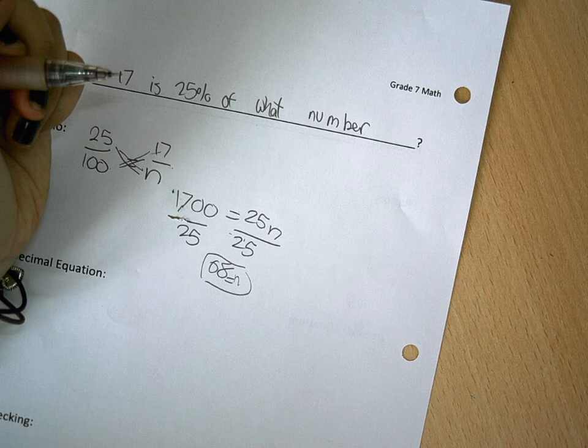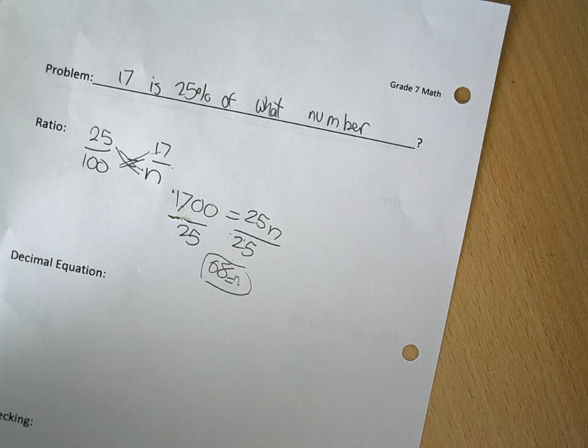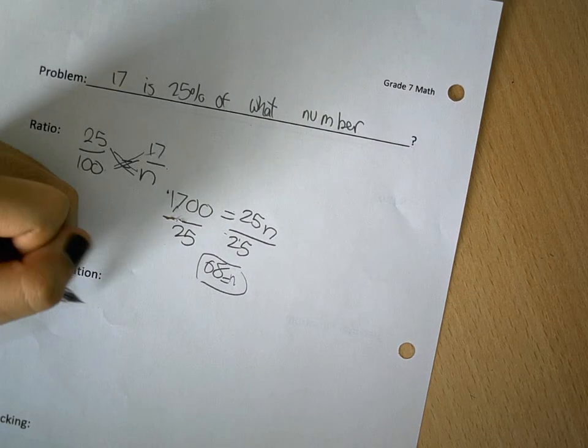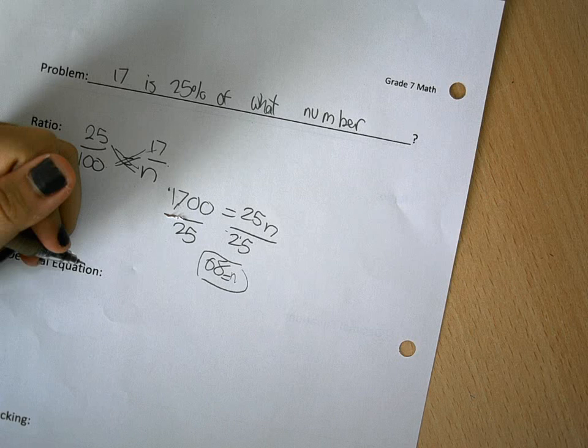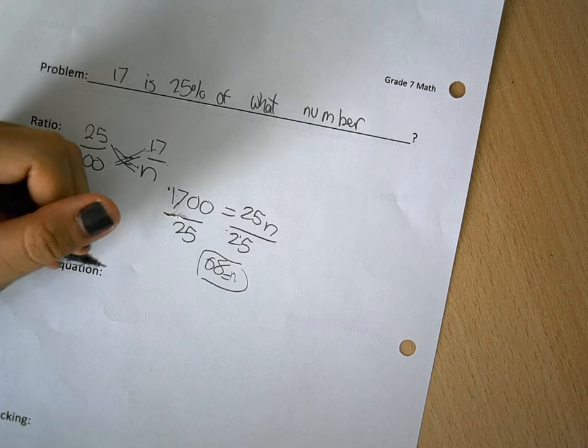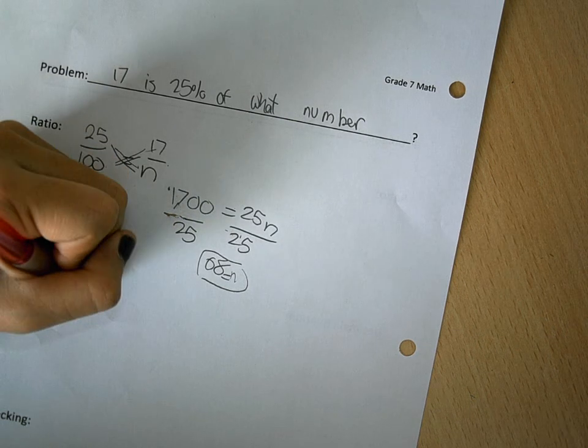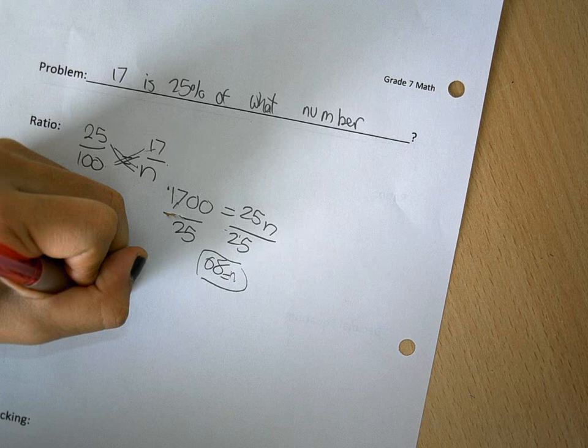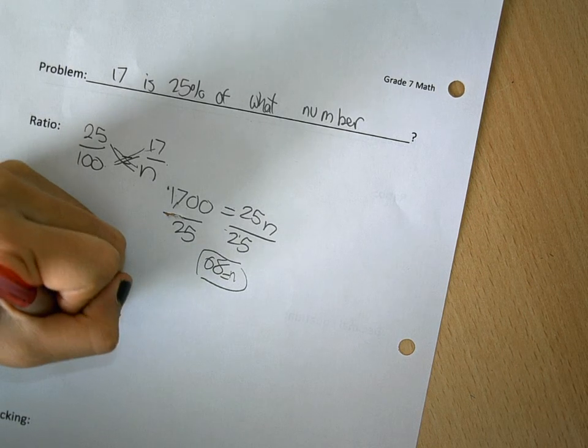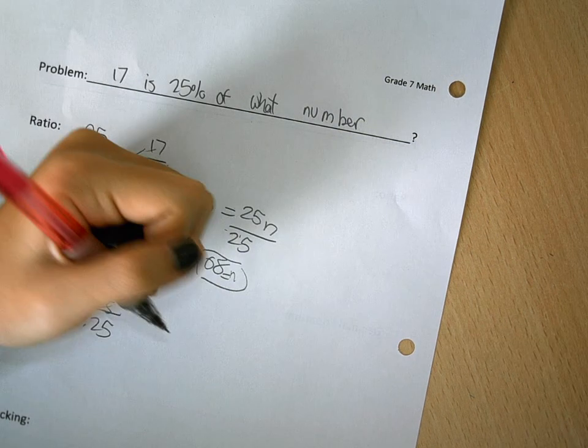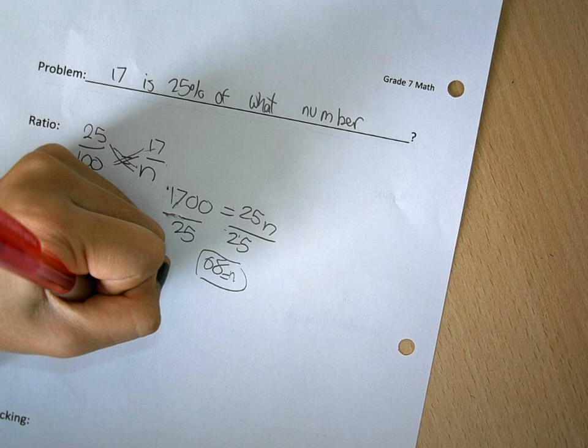For the decimal equation, you're going to take 17 over 0.25 equals n right here.